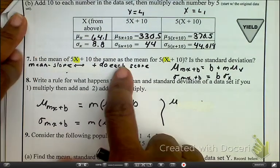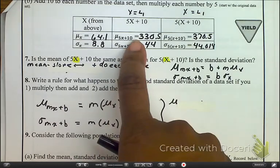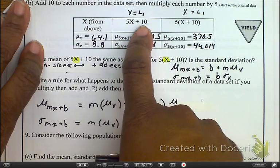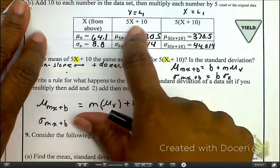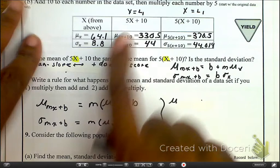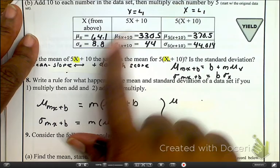Okay, now here we're talking about what happens when we have to add something to it and then multiply. Now remember, we took the average of the information, and when we multiply it by 5, it got fatter. When we add 10, it shifted.